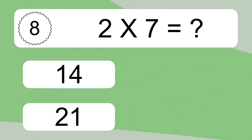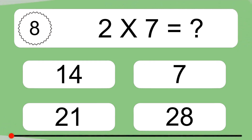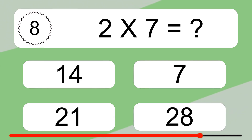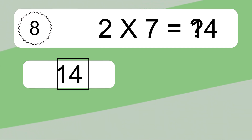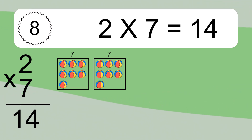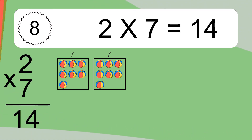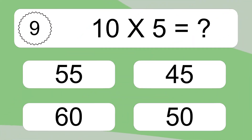2 times 7 equals what? 2 times 7 equals 14. We have 2 boxes, and each box has 7 colorful balls inside. If you count all the balls in all the boxes together, you will have 2 times 7 balls. This equals 14 balls.